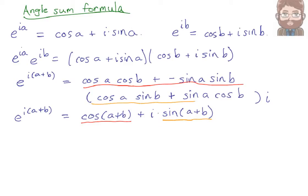And if we write down these two results, we have the angle sum formulas. Cosine of a plus b is equal to cosine a cosine b minus sine a sine b.